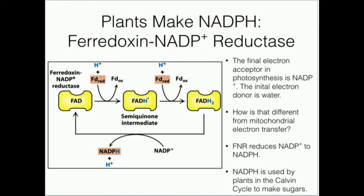In cellular respiration we go from NADH to NAD, and in photosynthesis we go from NADP+ to NADPH. Although there is that difference between NAD and NADP, it's basically just the reverse. Compare the structure of NADH and NADPH — they're basically identical except for a phosphate group.